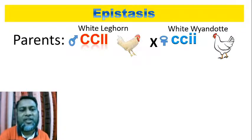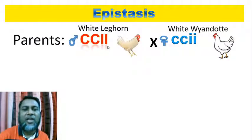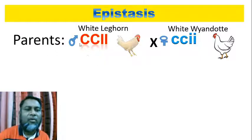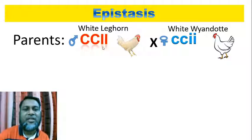At first, in the explanation of epistasis, we see white Leghorn. Its genotype is CC II — capital C, capital C, capital I, capital I. Whereas white Wyandotte, its genotype is cc ii — small c, small c, small i, small i. The Leghorn has both the color gene C and the inhibitor gene I. The color gene is hypostatic and the inhibitor gene is epistatic. In the presence of the epistatic or inhibitor gene, the color gene cannot be expressed.